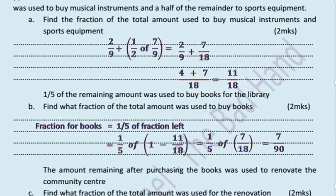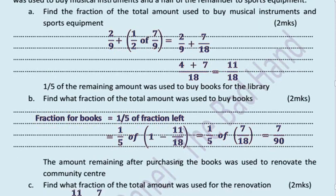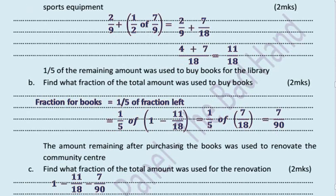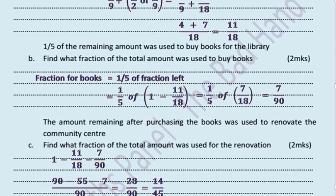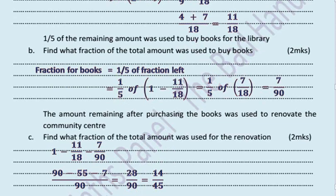The amount remaining after purchasing the books was used to renovate the community center. Find what fraction of the total amount was used for the renovation. For the renovation we have 1 minus the amount for musical instruments and sports which is 11/18 minus the amount for books which is 7/90. And looking for the LCM and subtracting, this gives us 14/45.